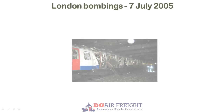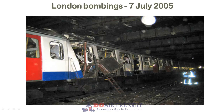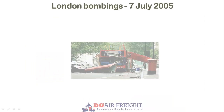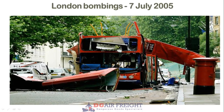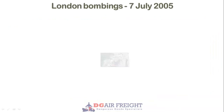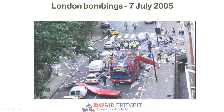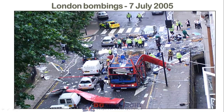On the 7th of July 2005, in London, four bombs were detonated — three in quick succession aboard underground trains, and later the fourth on a double-decker bus. These bombs were homemade, manufactured using acetone peroxide.